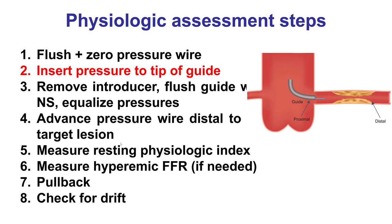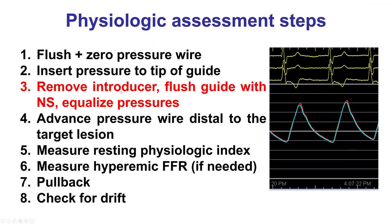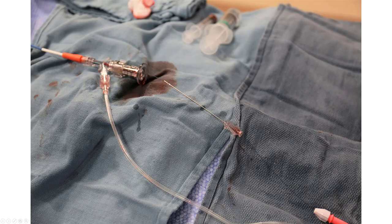Step two: the pressure wire is inserted and advanced to the tip of the guide catheter, with the radio-opaque portion protruding from the tip — because the sensor is at the junction between the radio-opaque and proximal parts of the wire. After removing the introducer — a critical step — the guide is flushed with normal saline and the pressures are equalized in the aorta. It is critical to remove the introducer from the wire connector; otherwise it causes a pressure drop, making equalization inaccurate.